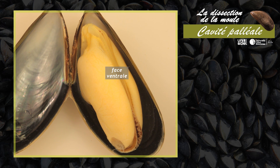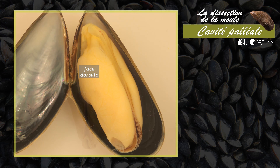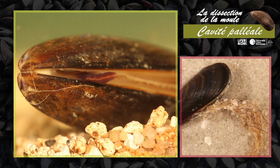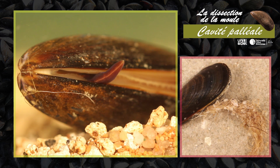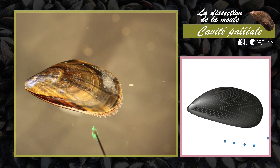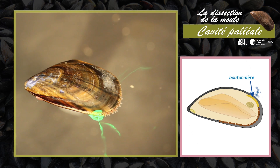Sur la surface du manteau sont visibles les muscles adducteurs antérieurs et postérieurs, les muscles rétracteurs du pied et du bissus. Une ouverture du manteau en position ventrale permet le passage du bissus et la sortie du pied. L'eau de mer circule en permanence dans la cavité paléale : elle entre par l'ouverture ventrale du manteau et sort par la boutonnière postérieure.